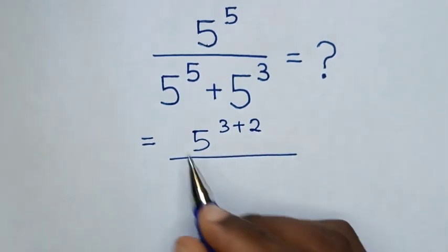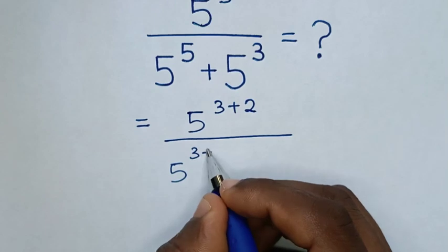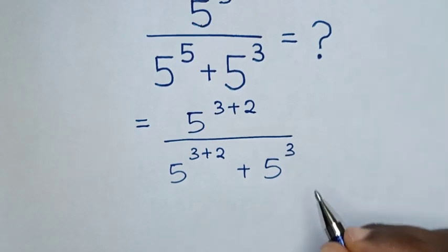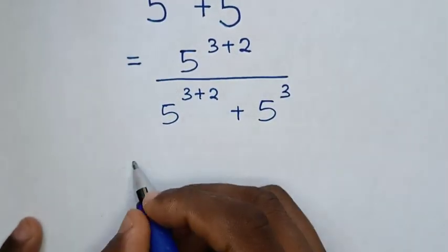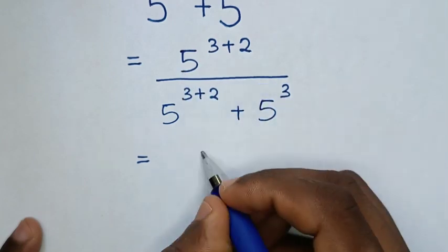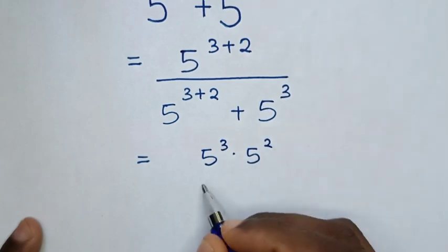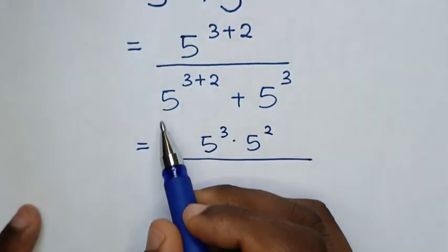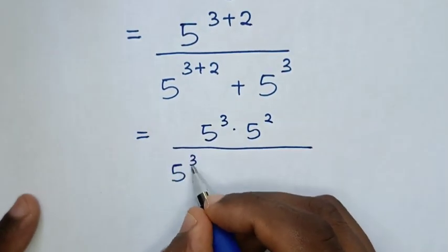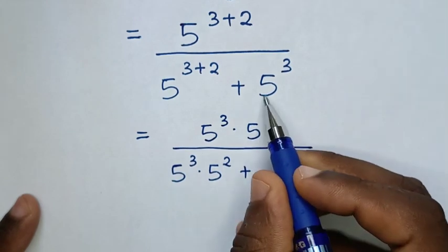Then over 5 power of 5, which is the same as 5 power of 3 plus 2, plus 5 power of 3. Then in the next step it will be equal to 5 power of 3 times 5 power of 2, over 5 power of 3 times 5 power of 2, then plus 5 power of 3.